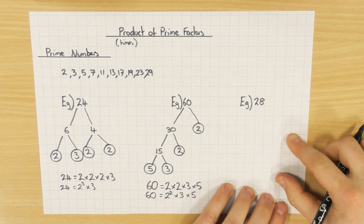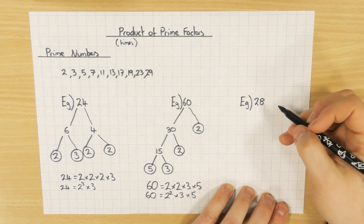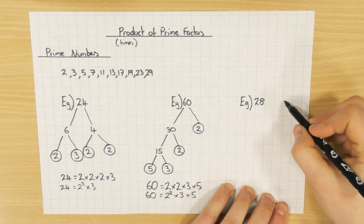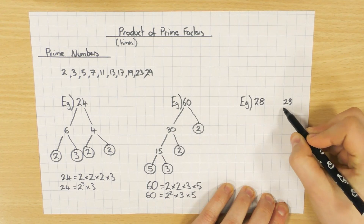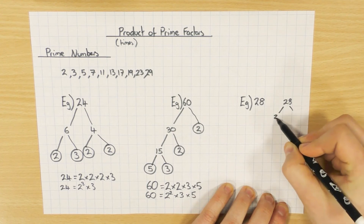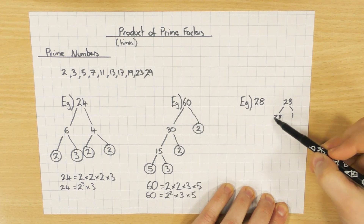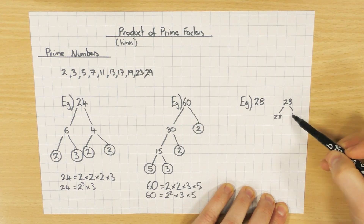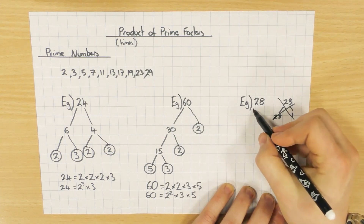Last but not least: 28. Just a side note — you don't want to be choosing two numbers that multiply to get 28 as 28 and 1. It's completely pointless because you still end up with 28, and as I said earlier, 1 is not a prime number. So don't do that — it's just a waste of time.